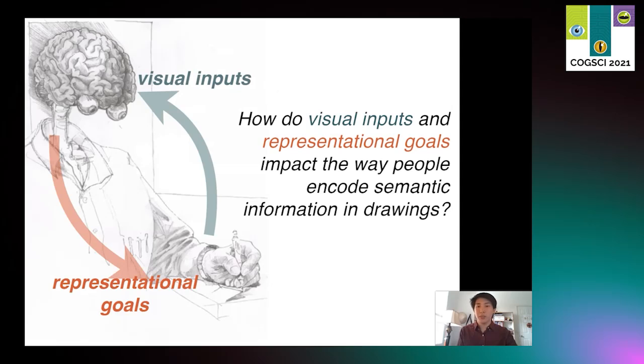To answer this question, we conducted an experiment to test the hypothesis that both visual inputs and representational goals can substantially impact the semantic information that people encode in their drawings, leading to drawings that are more perceptually grounded and convey more specific meaning when they are trying to draw a specific object they're viewing, and drawings that are more schematic and abstract when they must rely exclusively on long-term semantic knowledge to convey more generic meanings.